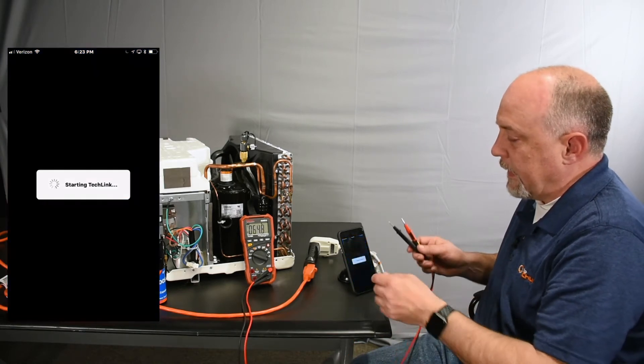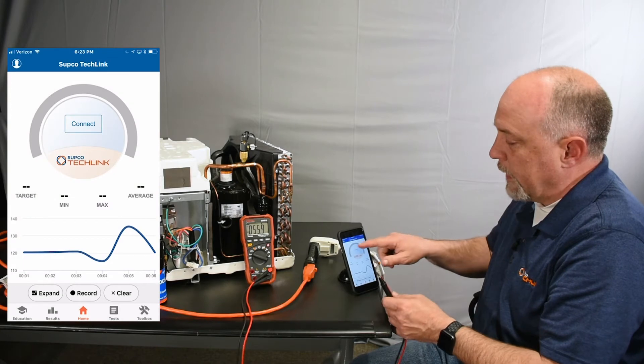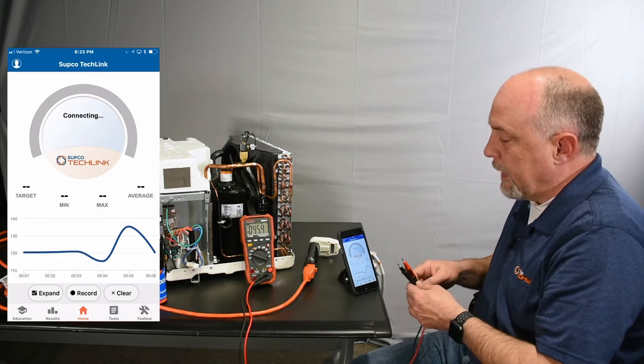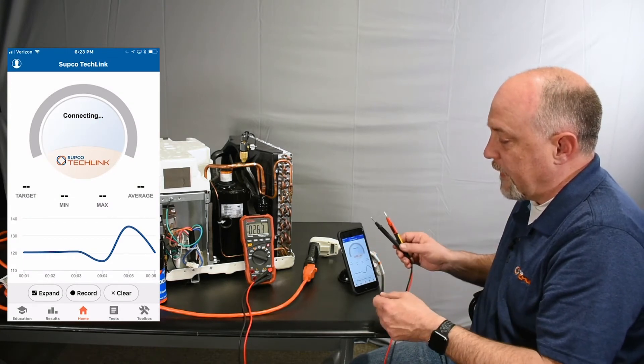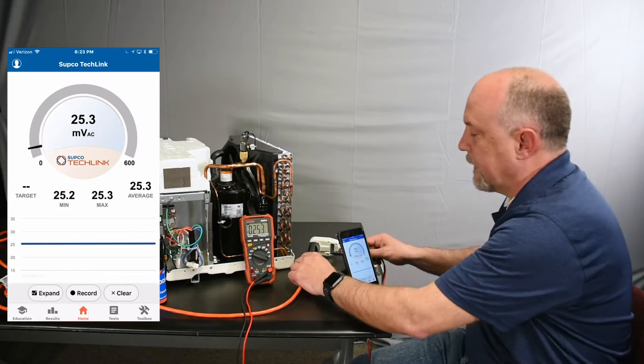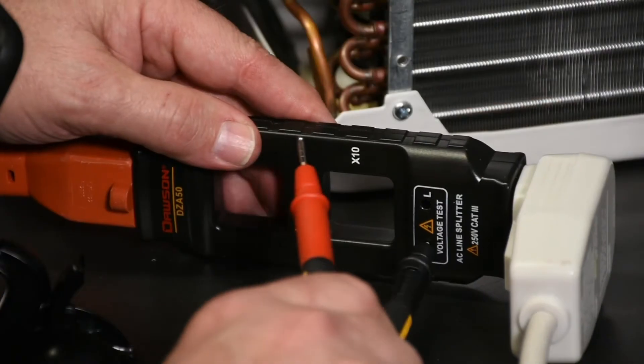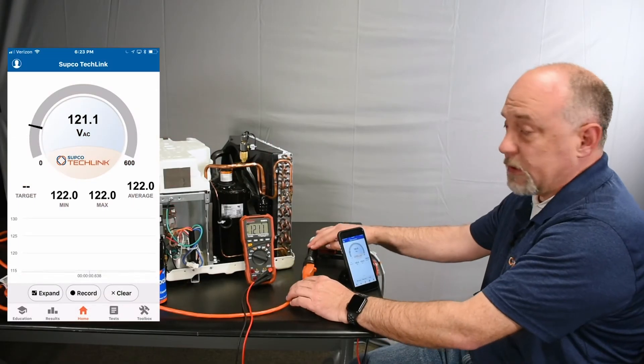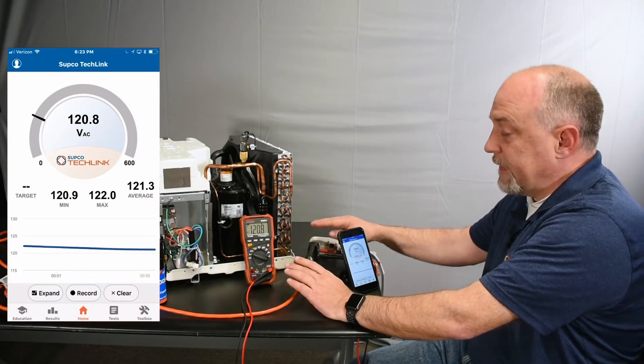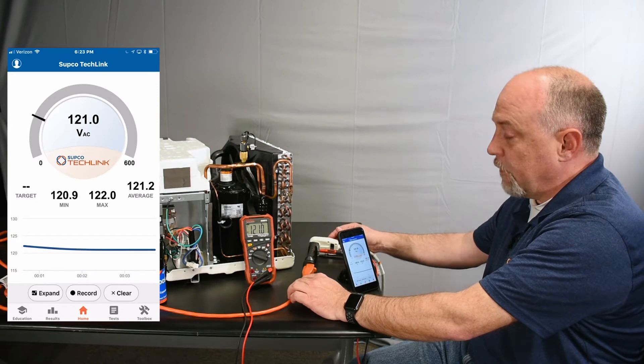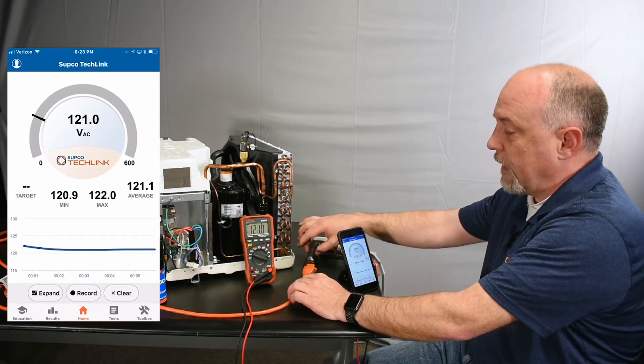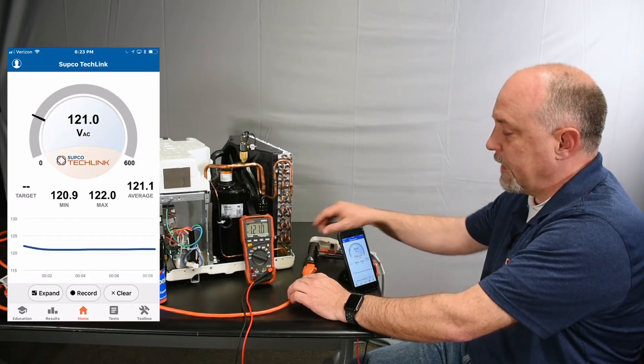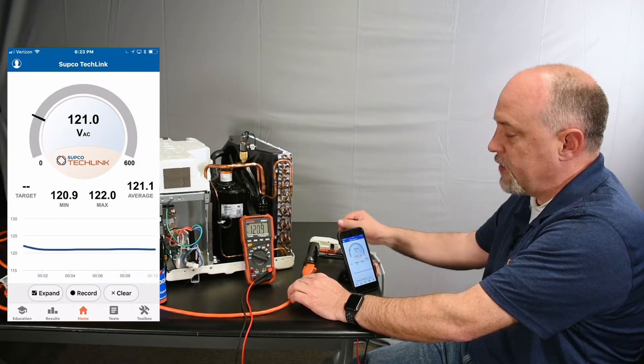So I've got the meter set up. I'm going to hit connect and the app takes just a second to find the meter. I have a line splitter installed, also available through Supco. This makes it easy to test any device that plugs in. We can measure current around these openings and here I've got a place to put my leads to measure voltage.